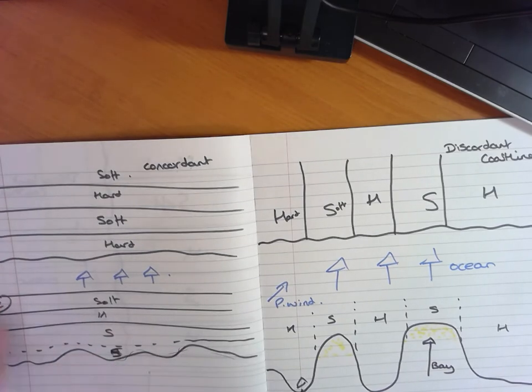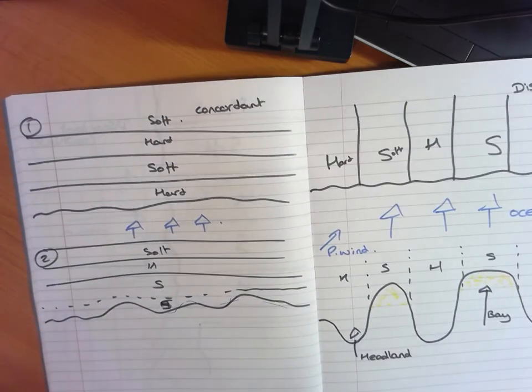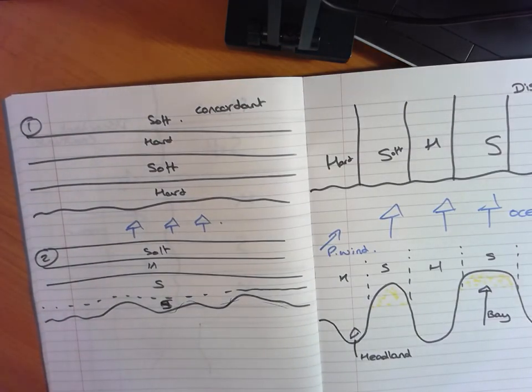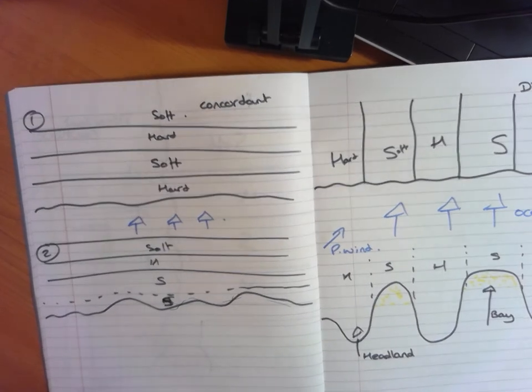Now, a soft example would be the Holderness coastline in Yorkshire. And if you type that in on YouTube or any BBC sort of articles, you will see the significant erosion that is taking place there. I hope this helps.